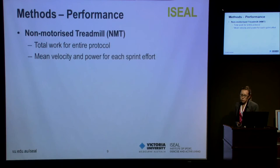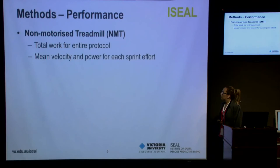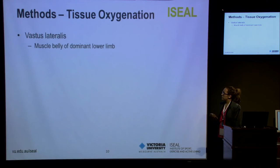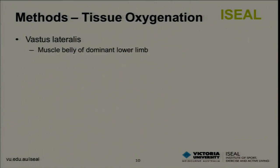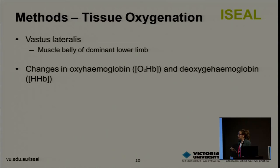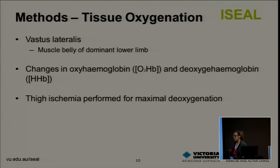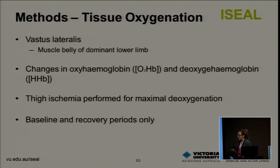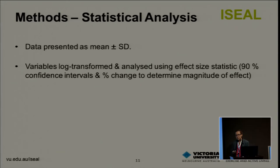We utilised a non-motorised treadmill and quantified total work for the entire protocol. We also measured mean velocity and power for each sprint effort, with data sampled at 50 Hz. We used NIRS to examine the vastus lateralis of the dominant lower limb. Probes were placed on the muscle belly and covered from external light using black elastic bandages. We measured micromolar changes in oxyhemoglobin and deoxyhemoglobin, and a thigh ischemia was performed post the repeated sprint protocol for maximal deoxygenation, with all data presented relative to this. We looked only at recovery periods and baseline measures, averaged over a one-second period. All data is presented as mean ± standard deviation with differences expressed through percent change and magnitude-based inferences.